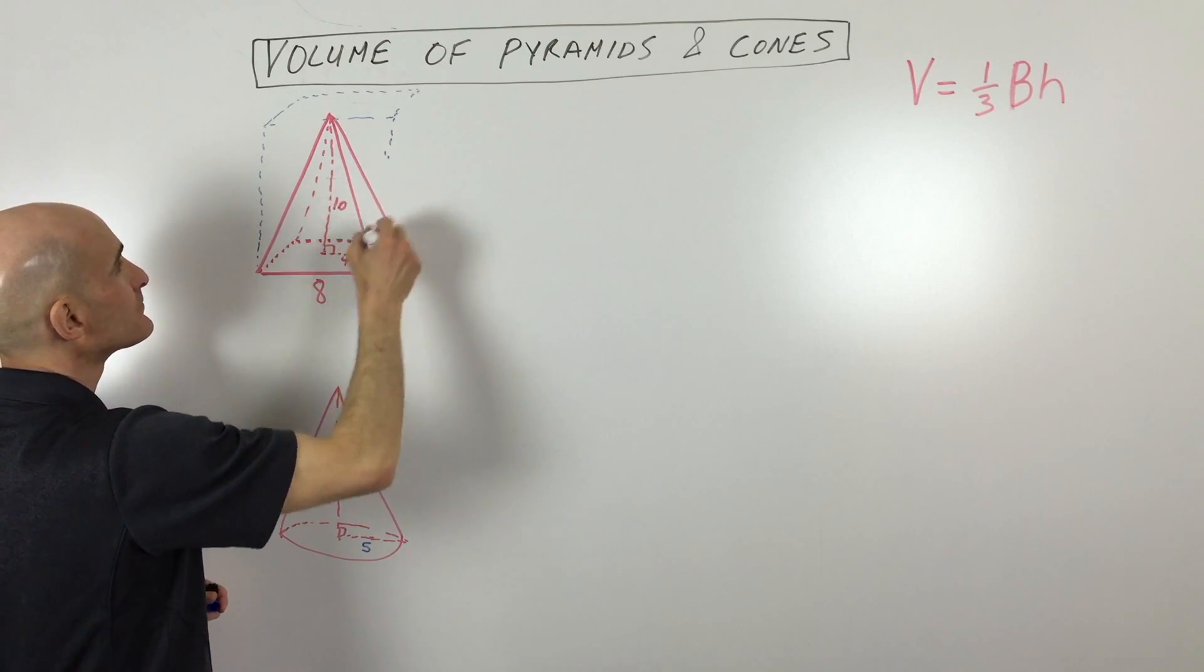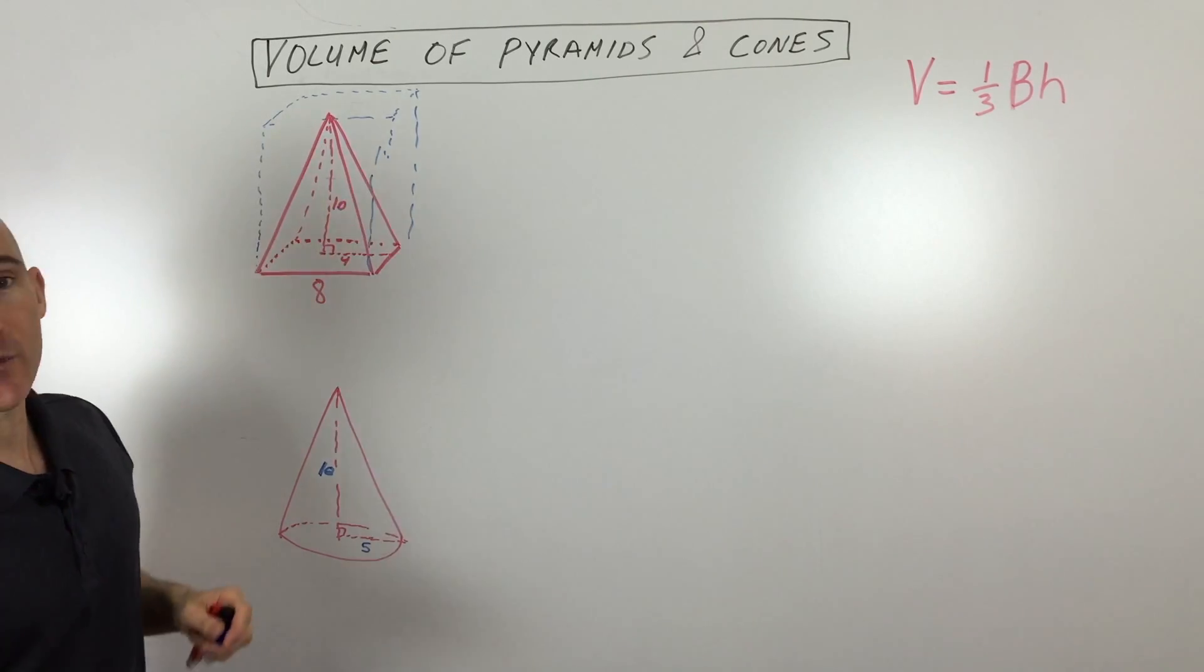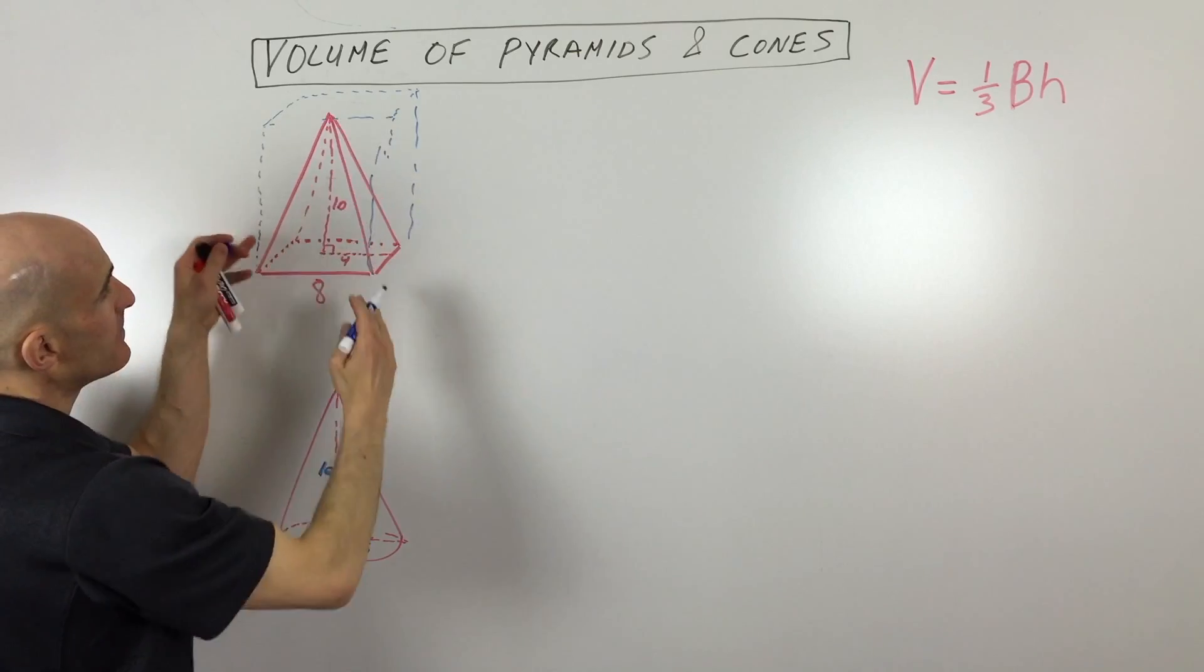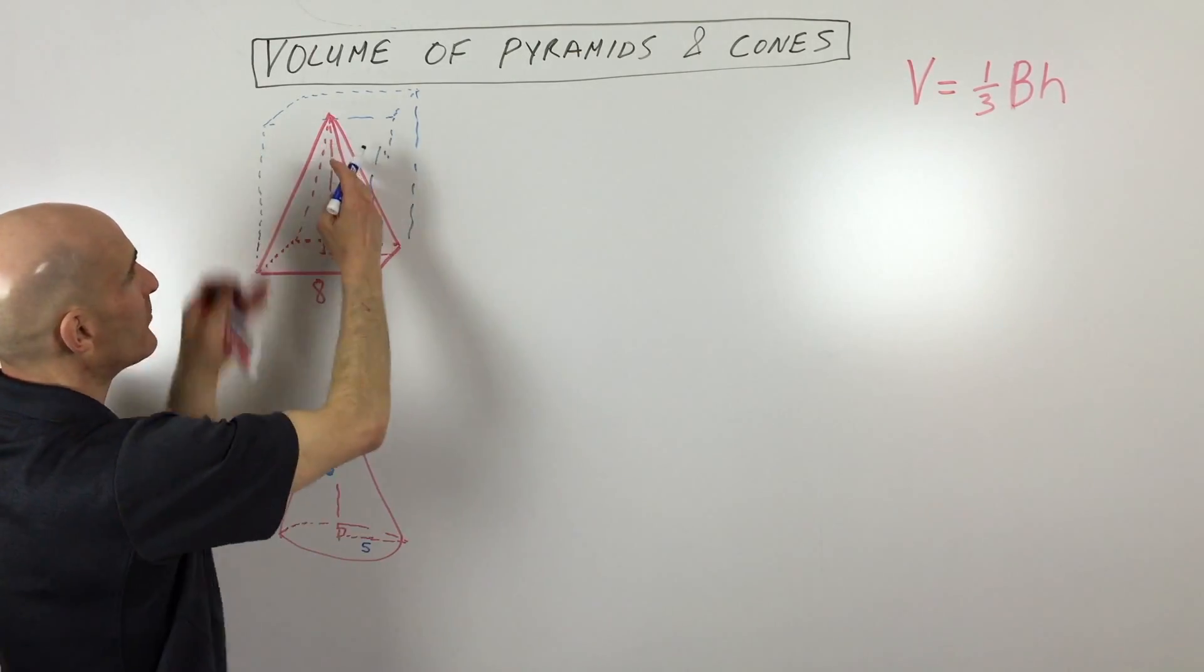If you put it in a box, this pyramid would only take up a third of the volume of that box. So if the bases were the same, the height was the same, because the pyramid is on a diagonal, it's angled up, like this,